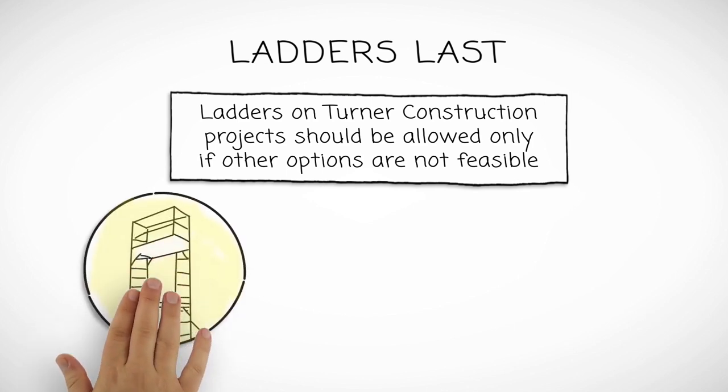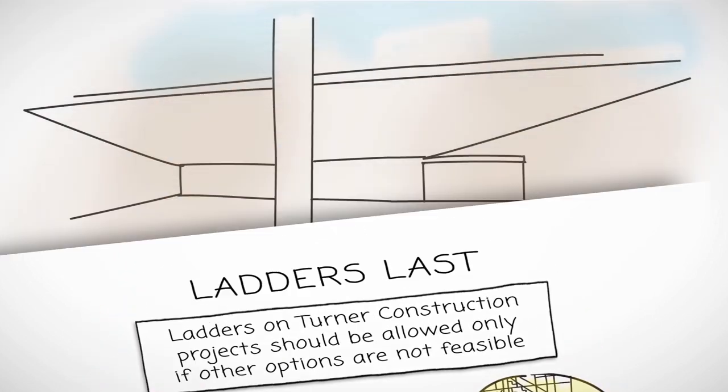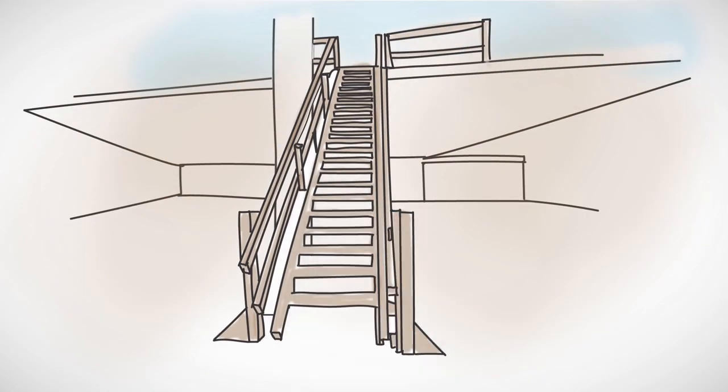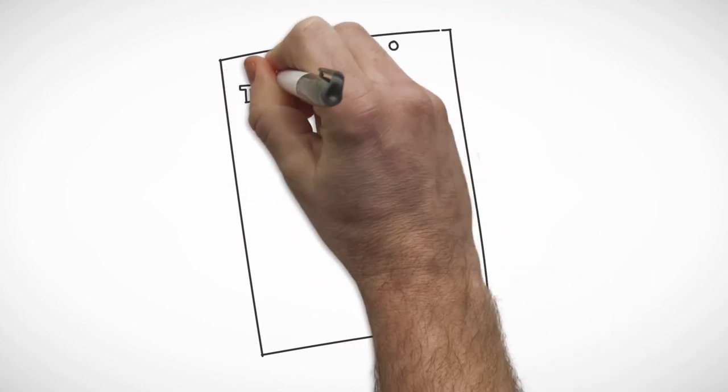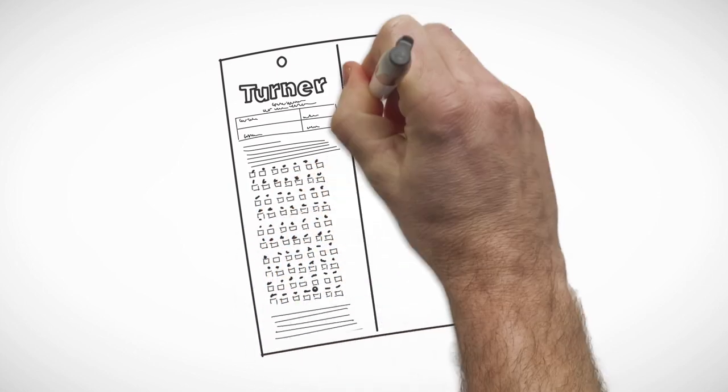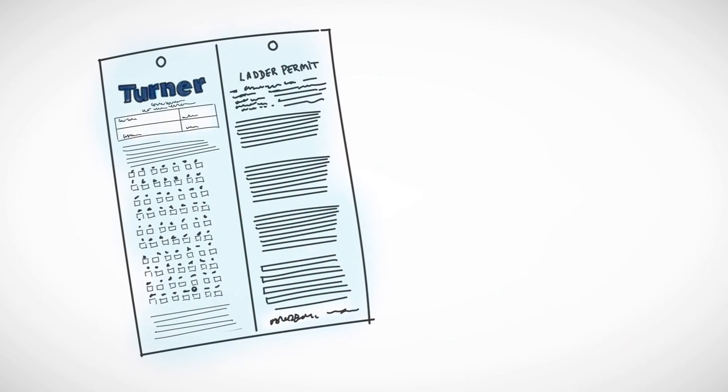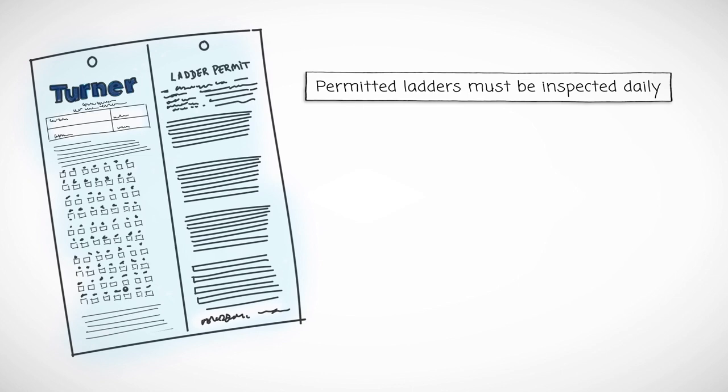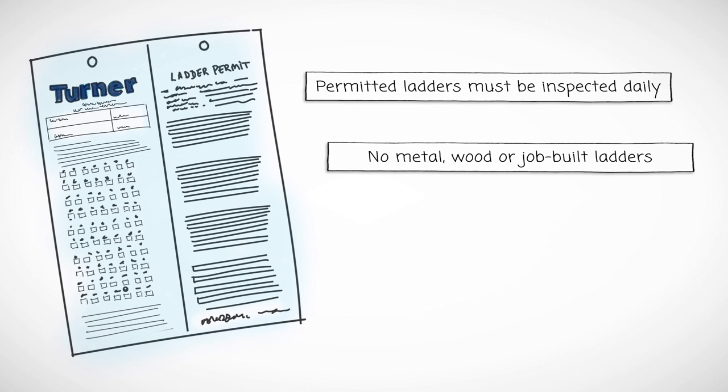Turner's Ladders Last Policy states that ladders on Turner construction projects should be allowed only if other options are not feasible. Lifts and scaffolding are always the preferred method whenever possible. Temporary stair towers or prefabricated stairs should be used to access different building levels. If it is determined that a ladder is the only means of performing a job, a ladder permit must be submitted prior to starting work. A ladder cannot be on site without a current permit and safety checklist. Permitted ladders must be inspected daily, at the start of each shift, by a qualified person. Metal, wood or job-built ladders cannot be used and must be removed from the job site.